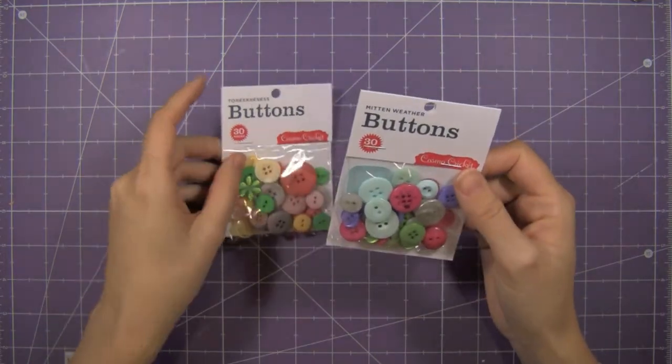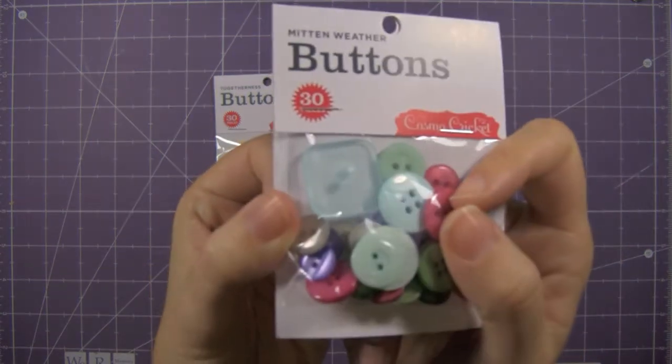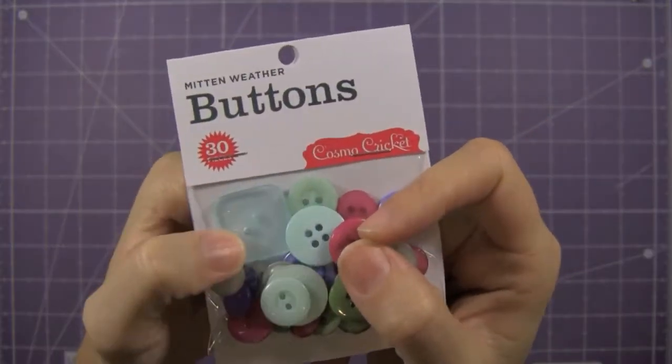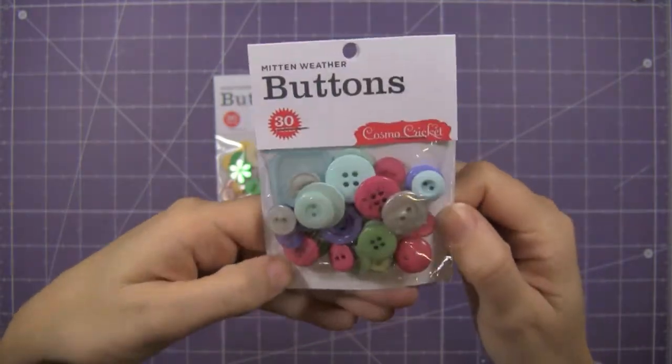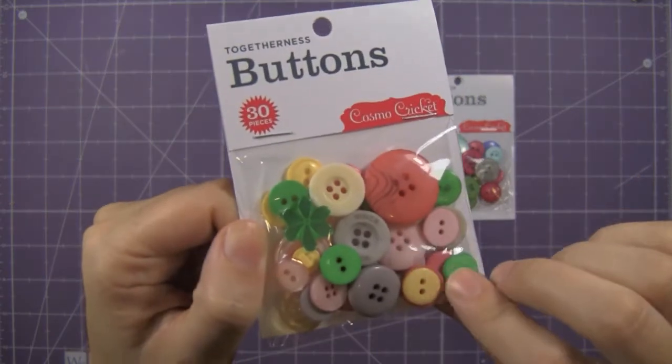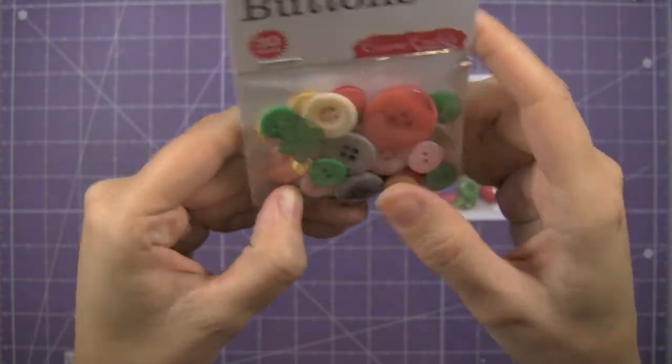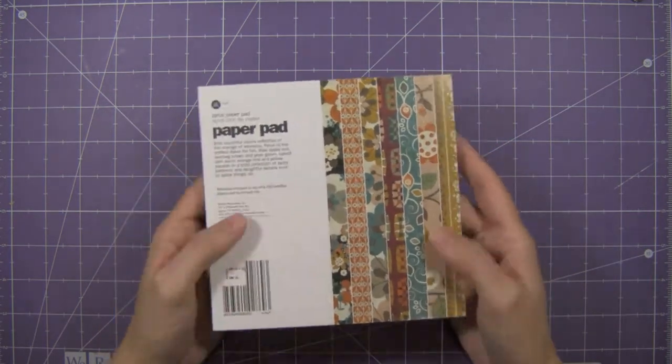So that's the Togetherness 6x6 mini deck. And to go along with those, Cosmo Cricket is now making buttons. How fun are these? I can't wait to get that bad boy out, that big square button. How fun is that? They just have some nice colors that match the pattern paper. This one has a cute little flower in it, so those are fun.